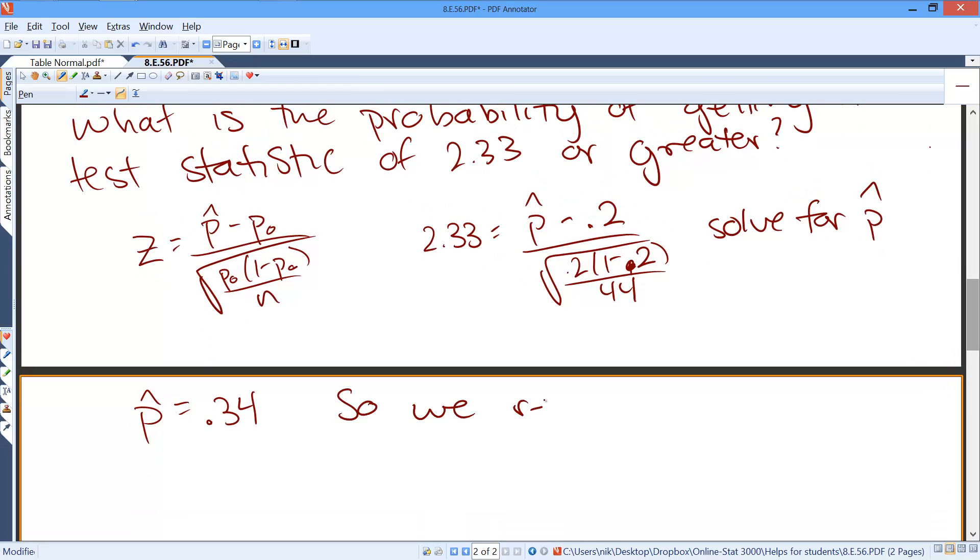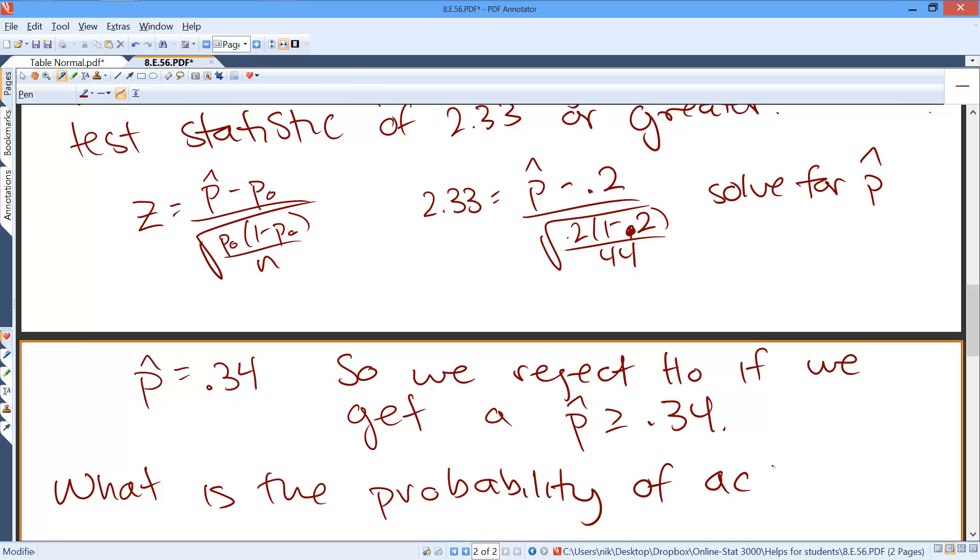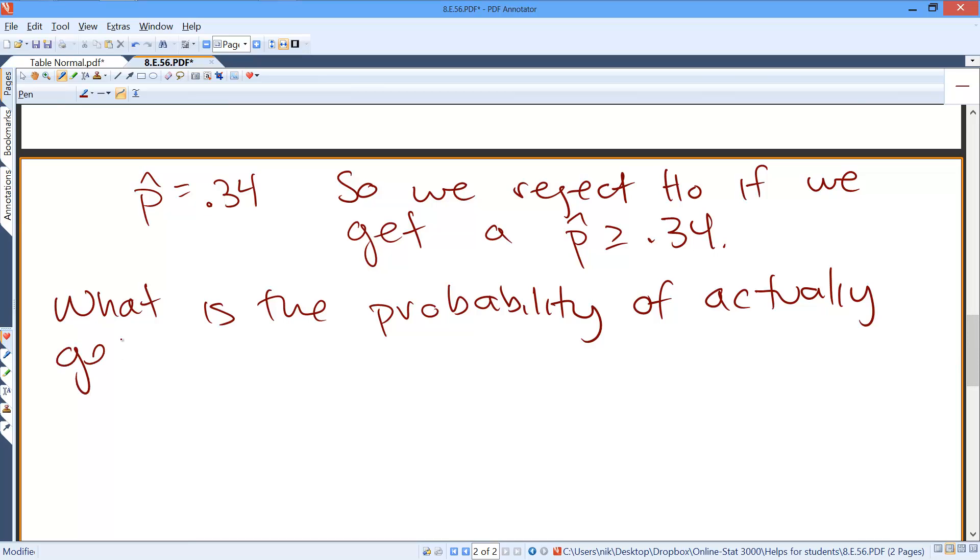So we reject the null hypothesis if we get a p-hat greater than or equal to 0.34. So I kind of caught myself on the last step. So we know when we reject the null hypothesis. So if we get a sample proportion greater than or equal to 0.34.